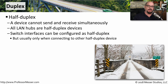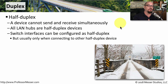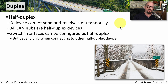When connecting your ethernet device to a network, you may see configuration parameters specifying which duplex to use: half duplex or full duplex. With half duplex, your device cannot send and receive data simultaneously — it must either send or receive, but not both at the same time. If you find an old ethernet hub, those are half duplex devices, and you would not be able to use full duplex communication with an old hub.